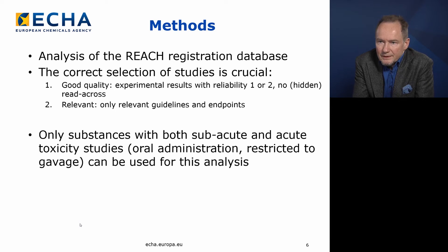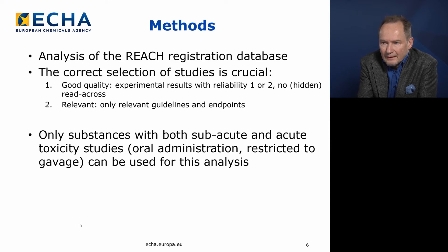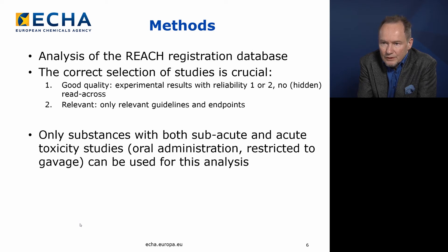What we did was take all the registration database cases and select a dataset where all studies are of good quality — the registrant indicated that the quality of the study is either reliability score 1 or 2, which is good enough for us. We excluded all read-across cases, explicit or hidden, because in those cases we have no certainty on what the real toxicity level for those substances is.